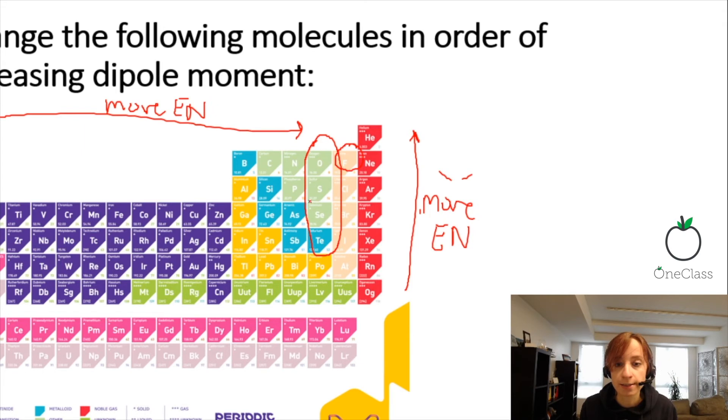Because they are all in the same column, they will all have the same Lewis structure. They will all be in a bent shape like this.